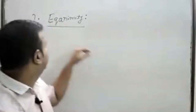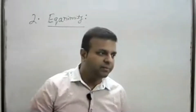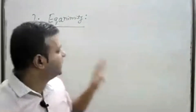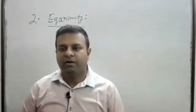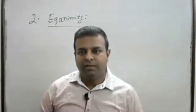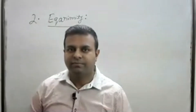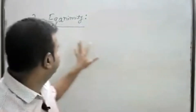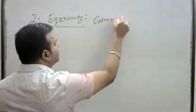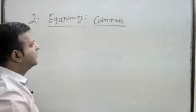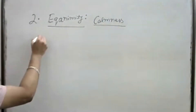Our second word is 'equanimity' — E-Q-U-A-N-I-M-I-T-Y. Equanimity means: when you are stressed out, frustrated, or irritated and you need to calm down — that peace, that calmness, is what equanimity refers to. Let's make an example to clearly understand this word.